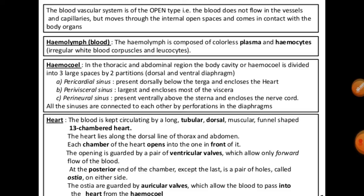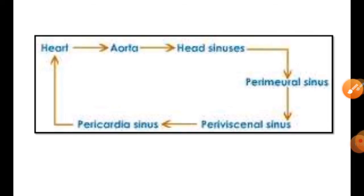Each chamber of the heart opens into the one in front of it, guarded by ventricular valves which allow forward flow of blood. At the posterior end of each chamber, except the last, there are paired holes called ostia on either side, guarded by auricular valves which allow blood to pass into the heart from the haemocoel.